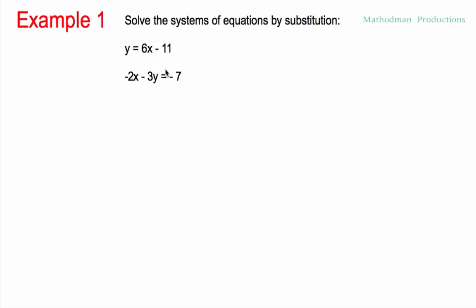The first step is to identify which one is the easier equation out of the two. How can you tell which one's easier? Pick the one where it's easier to isolate a variable. I would pick the first one as my easiest one — just label this the easier equation, because one of the variables is already isolated and already solved for.